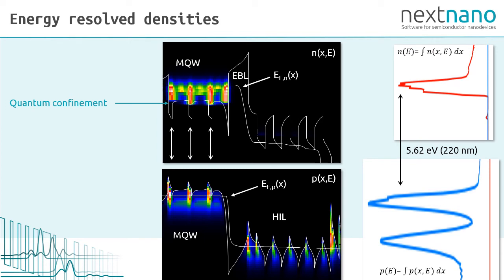Now let's look at the energy resolved densities. The upper figure shows the energy density as a function of position and energy. We can see here our multi-quantum well region with three electron quantum wells and three hole quantum wells that are occupied with carriers. This is our triangular quantum well region for the electrons, which is not a triangular potential well for the holes.